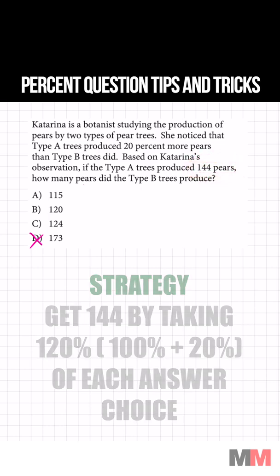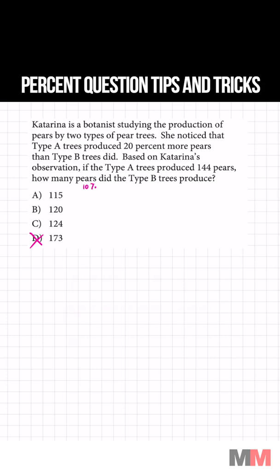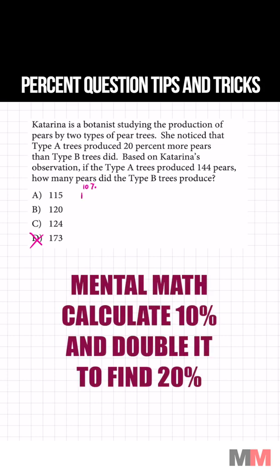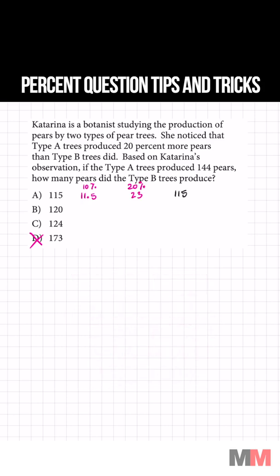If you want to first find 10% of the number, just move the decimal place one over, which is going to be 11.5. Double that and you'll get 20%. That's 23. 115 plus 23, that's not going to equal 144.